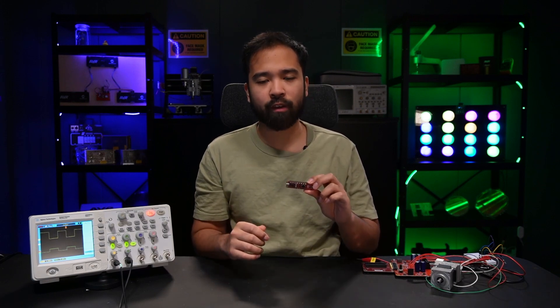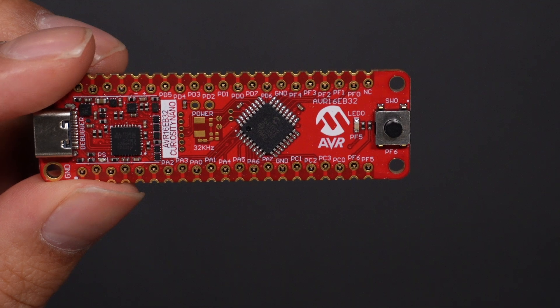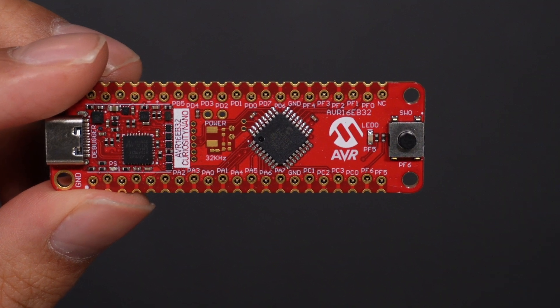At the end we'll see the TCE and waveform extension in action by spinning a motor. In front of me here we have the CNano AVR-EB, which we will be using today to showcase what the TCE and waveform extension can do.